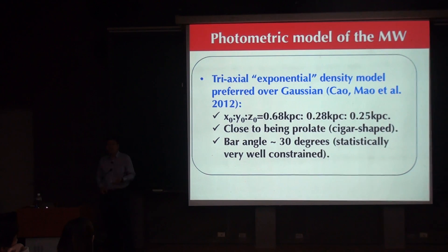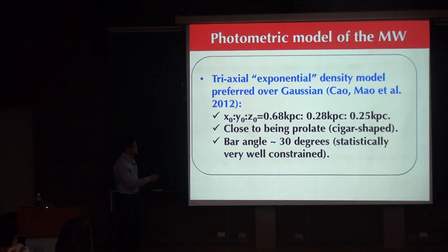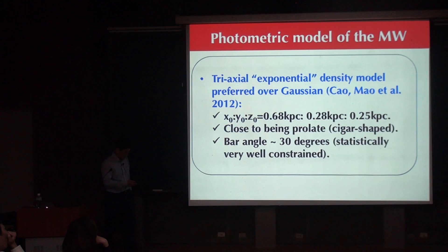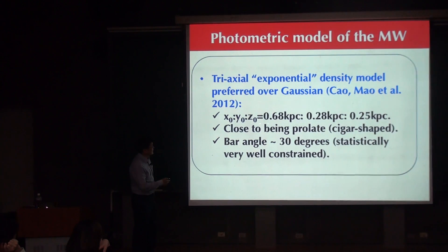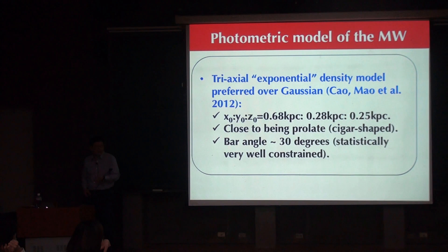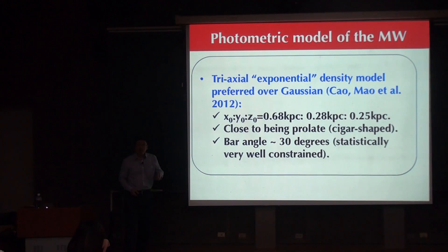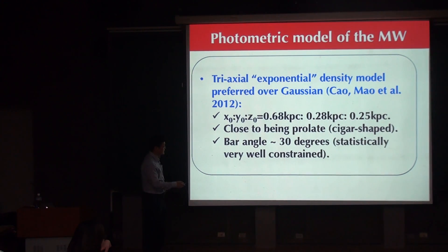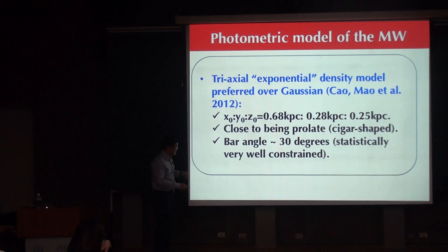When you fit the counts of red clump stars in these regular ellipses, what do you find? This has been done by my postdoc a few years ago. What we find is that the number counts of red clump giants actually prefer an exponential density model rather than the Gaussian model people had been using previously. The three axes have lengths 0.7, 0.3, and 0.25 kpc. This central bar structure is actually close to being prolate — shaped like a cigar — and the bar is oriented about 30 degrees away from the line of sight. This is very well constrained statistically.